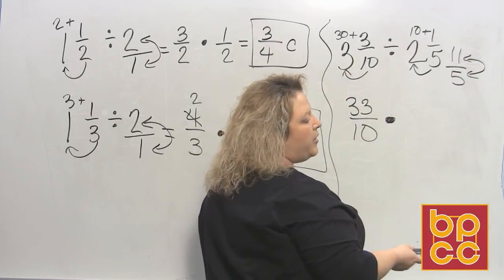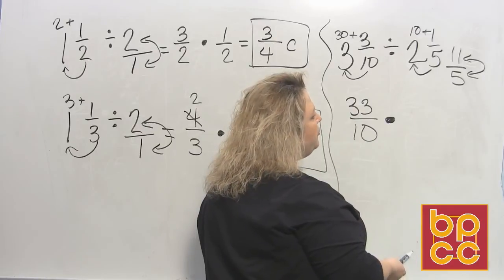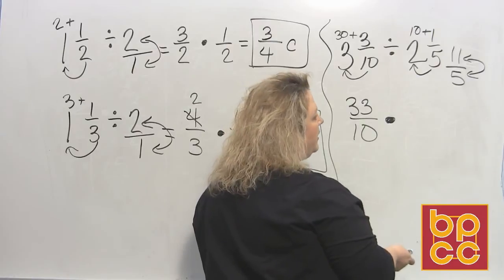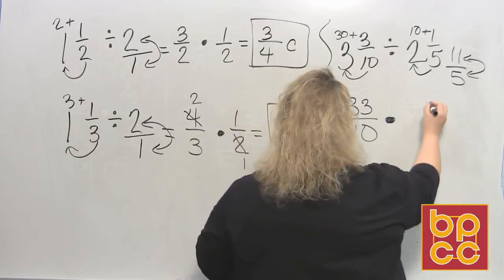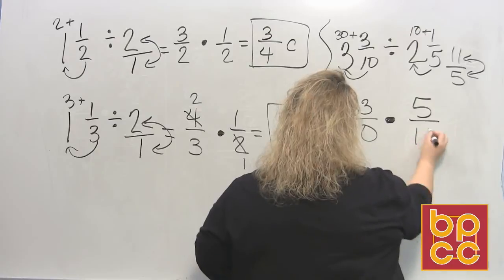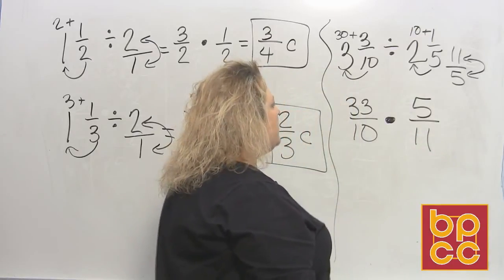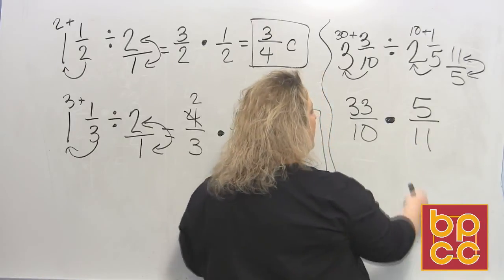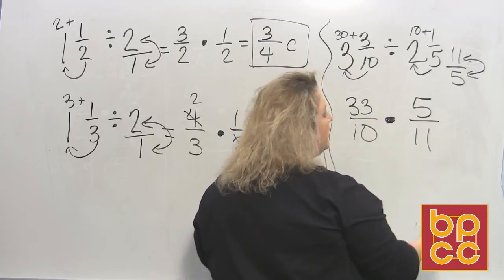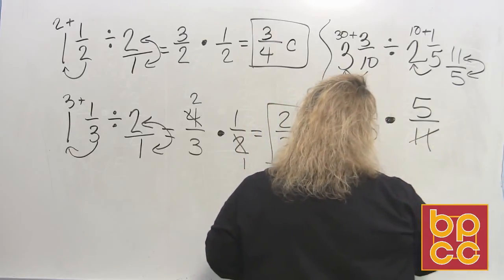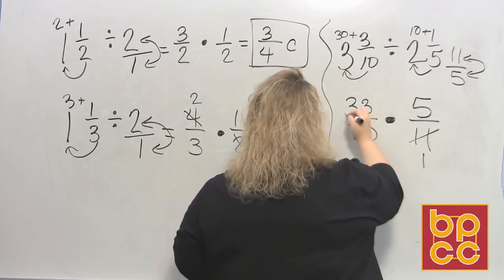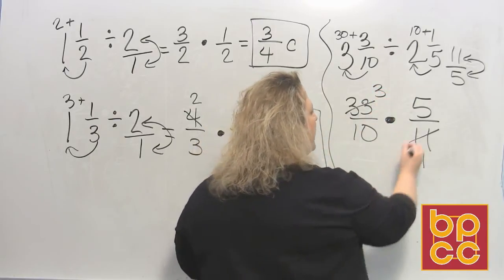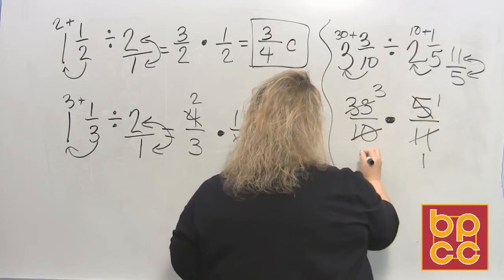So anytime you're multiplying or dividing two mixed numbers together, you're going to change them to improper fractions. But on dividing, after you change it to an improper fraction, then you're going to flip it over. Now once you go through this process, then the last step is to look to see if there's anything you can divide by. Well, 11 and 33, they have something in common. It's 11. 11 divides into 11 once. 11 divides into 33 three times. And then I'll look at 5 and 10. 5 divides into 5 once. 5 divides into 10 two times.